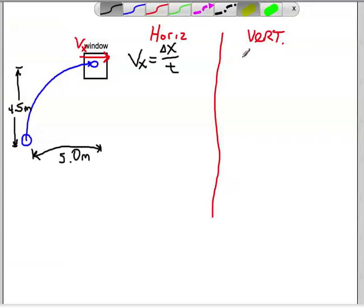For starters, we know the acceleration of the object. We know that the acceleration is going to be negative 9.8 meters per second squared.